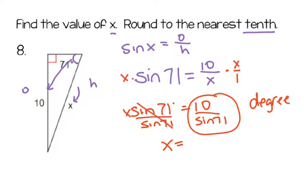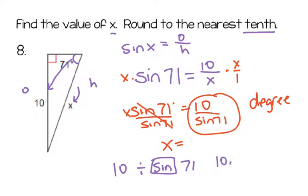I'm going to type this into my calculator: type in 10, then divide it by sine, then 71 degrees. When I do that, I'm going to get 10.576. Since I'm rounding to the nearest tenth, the 7 turns that 5 into a 6 — so 10.6 is my answer for the hypotenuse.